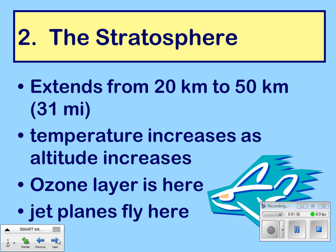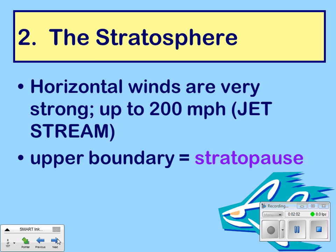The stratosphere extends from 20 kilometers to 50 kilometers. Temperature increases as altitude increases — the opposite of what happens in the troposphere. The ozone layer is here in the stratosphere. This is also where planes fly. Horizontal winds are very strong in this layer, up to 200 miles per hour, which is where the jet stream comes in. The upper boundary is called the stratopause.